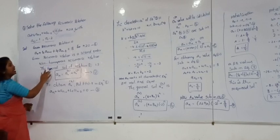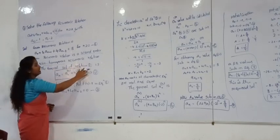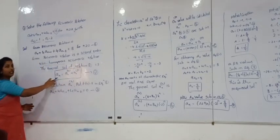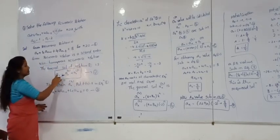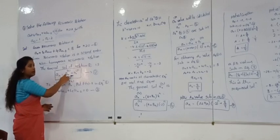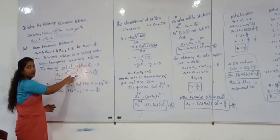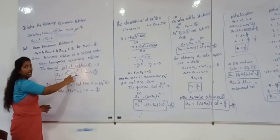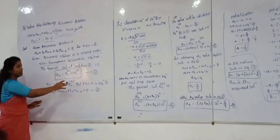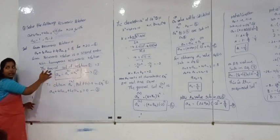So next part: the general solution of the recurrence relation is A_n equal to A_n^h plus A_n^p. H means the homogeneous equation solution. P means the particular (partial) solution. This is the main formula.